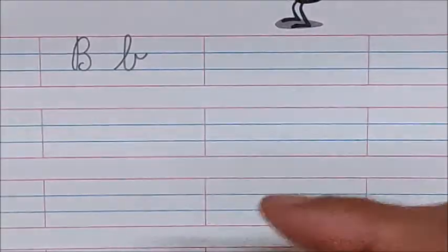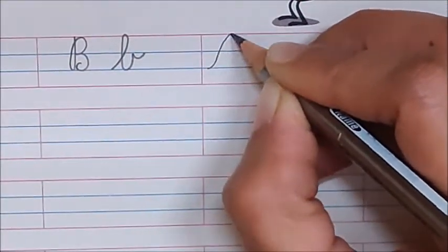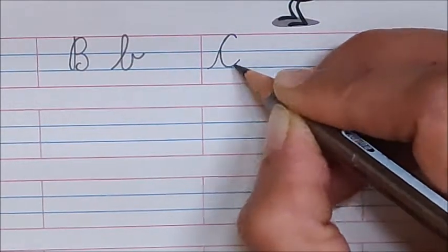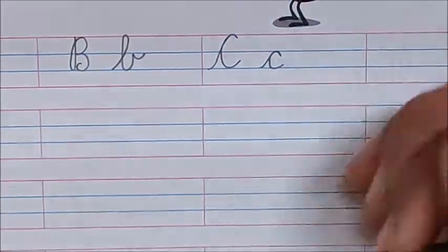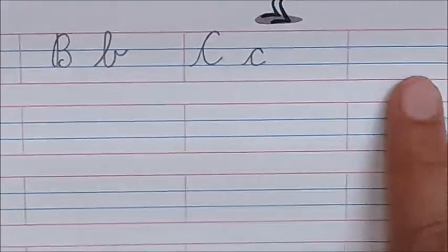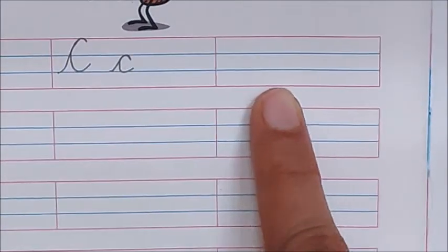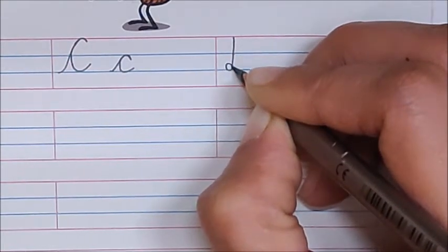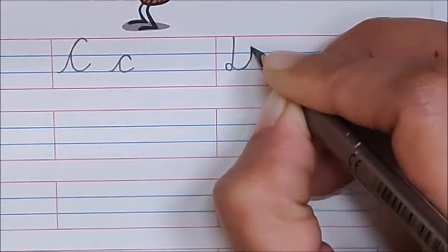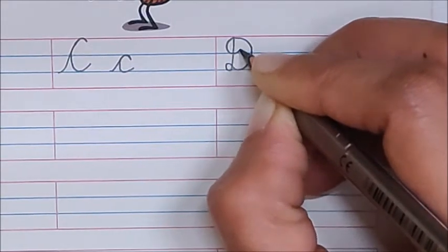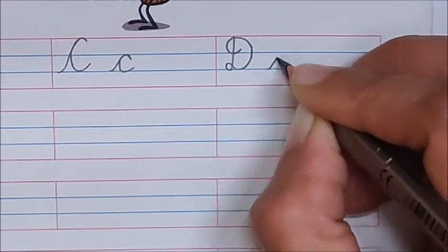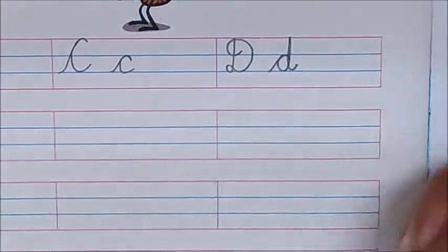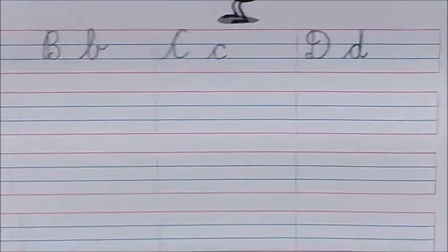A, B, C. Write down here C. Capital cursive C and lowercase cursive C. D. Standing line, loop behind. Now, go up. Now, turn inside. D.